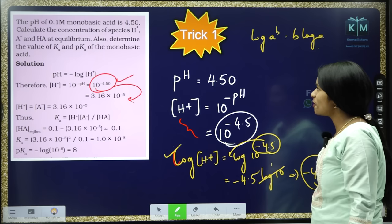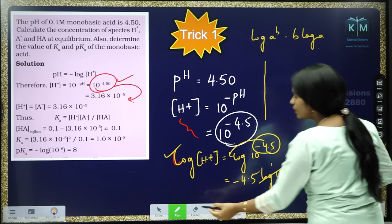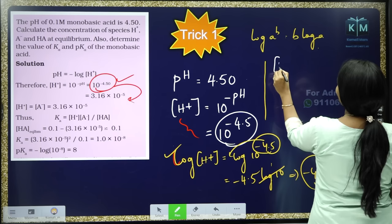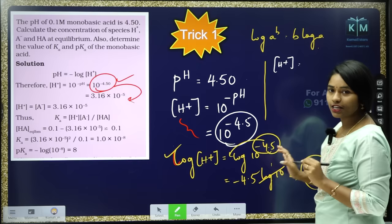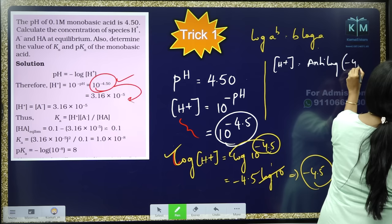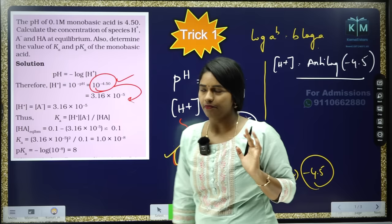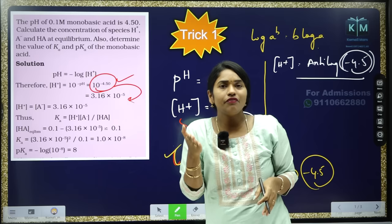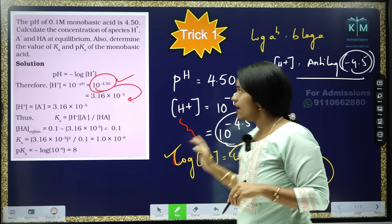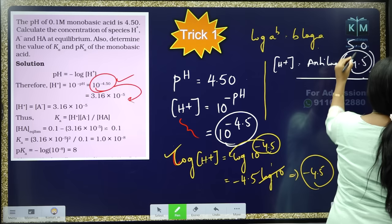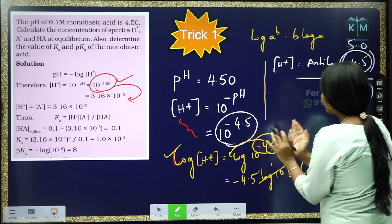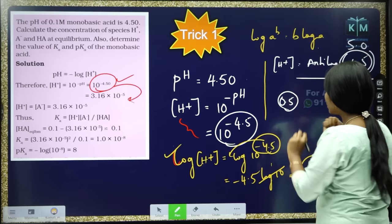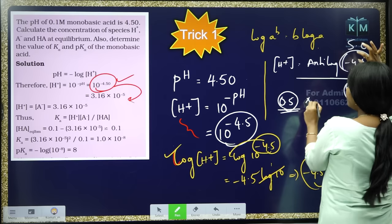If log H+ equals minus 4.50, when log moves to the other side it becomes anti-log. So H+ = anti-log of minus 4.5. The technique to solve this: whatever the number is, round it up. If it is 4.5, round it off to 5. If it is 6.3, round to 7. If it is 8.4, round to 9. Here, rounding minus 4.5 to 5 — from that 5 subtract 4.5, giving 0.5. The answer uses 0.5 as the anti-log value, and the rounded number becomes the power: 10 to the power of minus 5.